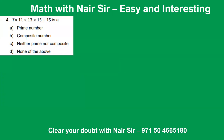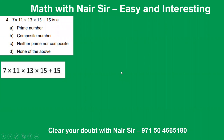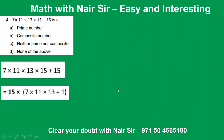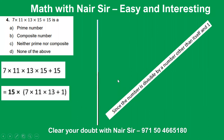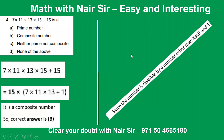Question 4: Is 7 × 11 × 13 × 15 + 15 a prime number, composite number, neither prime nor composite, or none of the above? Take 15 as common. Since the number is divisible by 15 and by itself, it is not a prime number — it is a composite number. Answer is B.